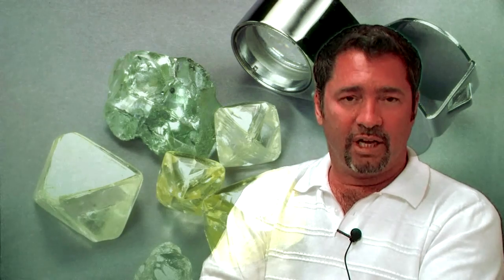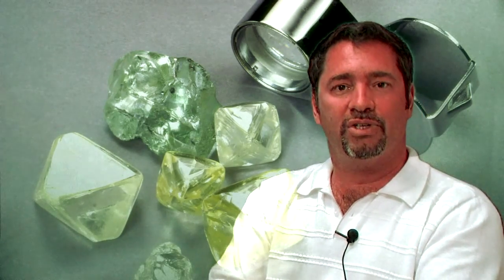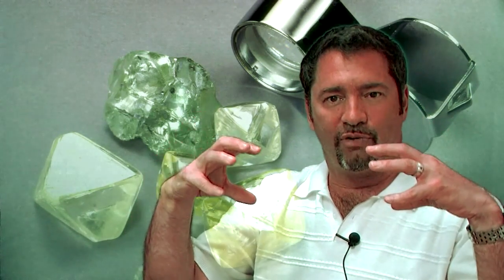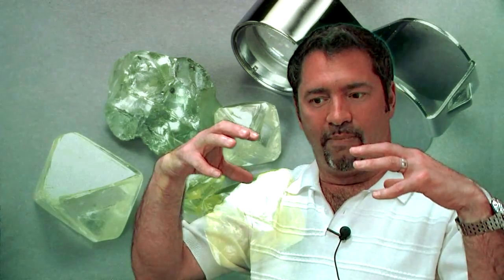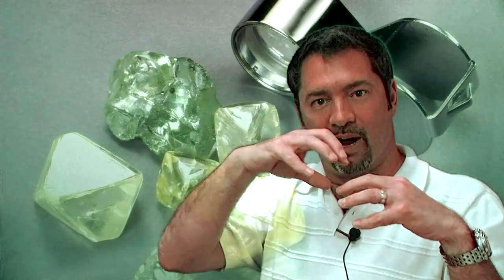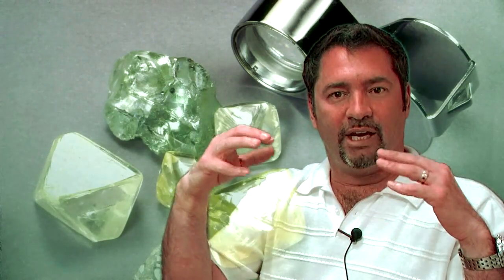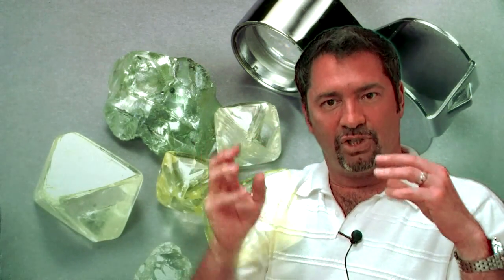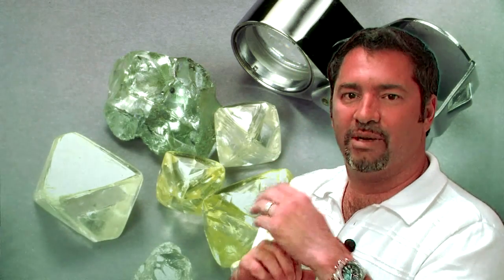Symmetry grading in laboratories primarily looks at how well the facets are aligned with one another. On the crown, how well a facet is aligned with its opposite corresponding facet and also its corresponding facets on the pavilion. We're going to look at some of these things.